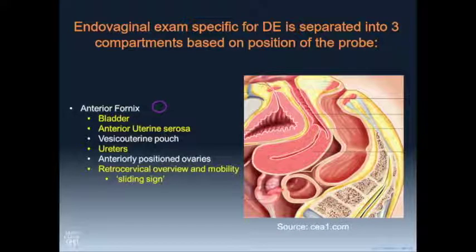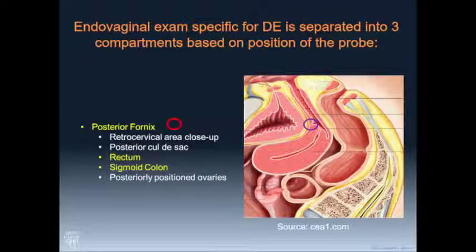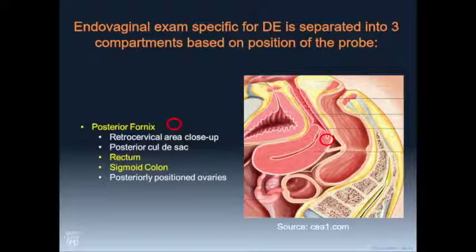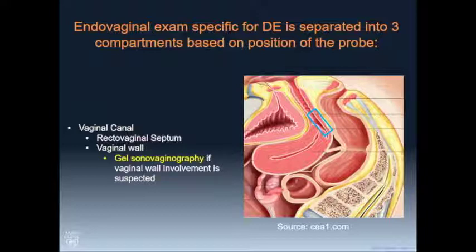Just briefly about these different compartments so we're all on the same page. At the anterior fornix, we place the transducer there to look at the bladder, the anterior uterine serosa, find and follow the ureters, and press on the cervix from the anterior fornix to look at a sliding sign. In the posterior fornix, we look at the retrocervical region up close, find the utero-sacral ligament areas, and do primary imaging of the rectum following it up to the sigmoid colon. We should also consider the rectovaginal septum and the vaginal canal itself — some patients you won't see anything until you put gel into the vagina and distend it.